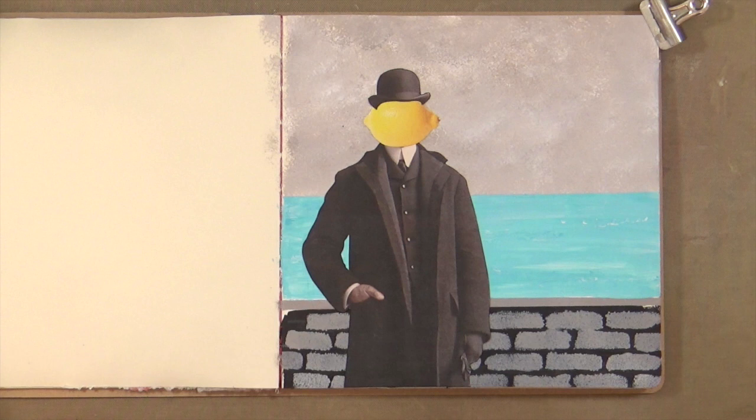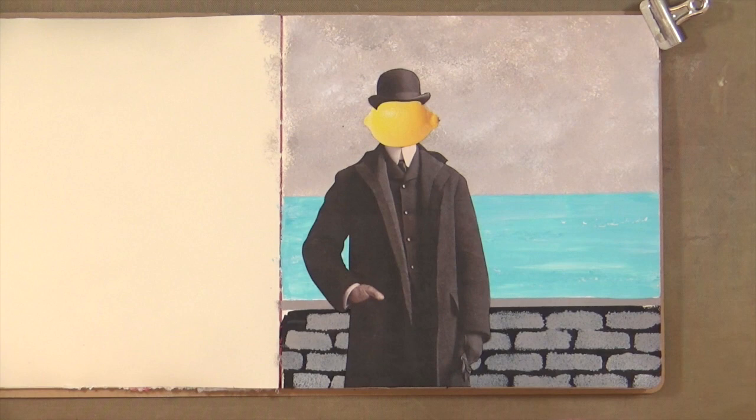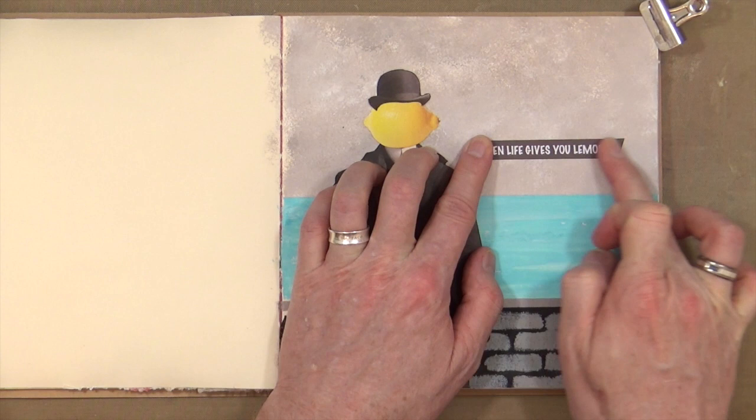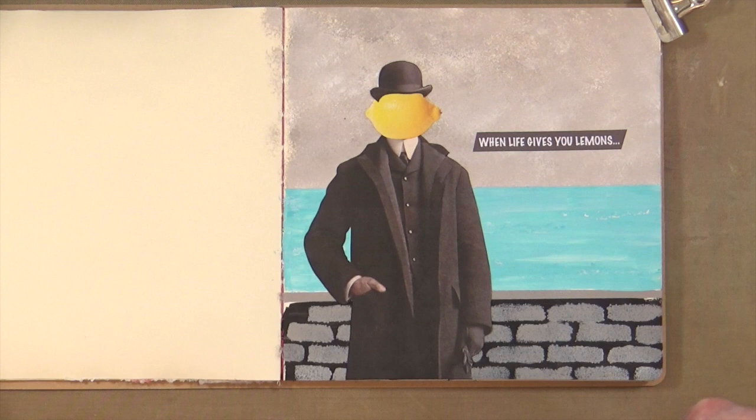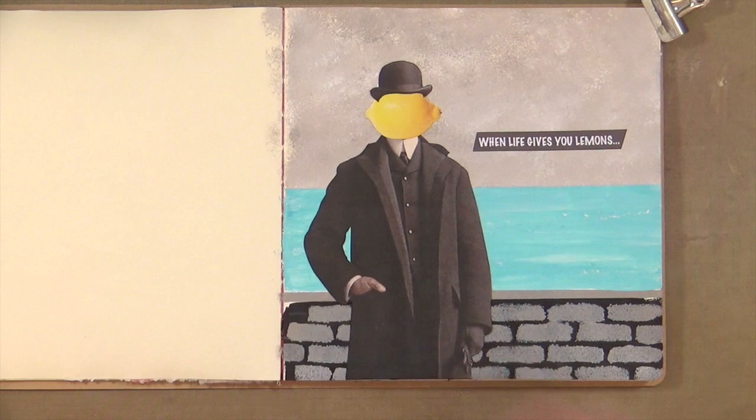So there you go. The original René Magritte picture had an apple obscuring the face, so I've put a lemon. Just for my quote for the page, I've printed off on the computer a little quote block that just says 'When life gives you lemons.' That's it. I'm not going to continue the phrase because everybody knows what the next line is. I just thought, considering what we're all having to go through at the moment, when life gives you lemons, you've just got to make the most of it.